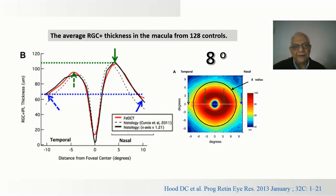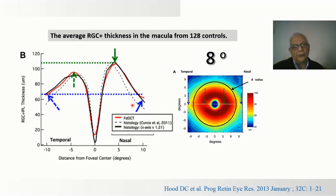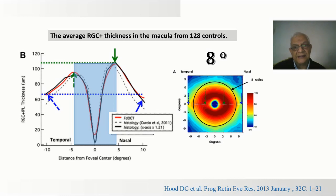Here they have the average of the retinal ganglion cell inner plexiform layer thickness in the macula from 128 healthy control persons. They show the thickness compared to the distance from the fovea. The OCT results are shown in red and compared with a histological study shown as a dotted line. When adjustment is made for tissue shrinkage, the black line almost overlaps the OCT, and they found the thickest part is located eight degrees around the fovea.